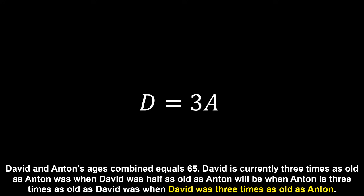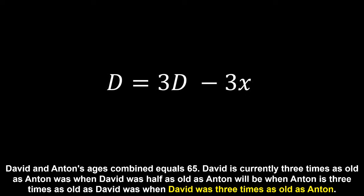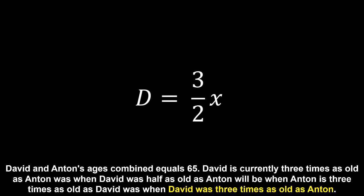The final age described is that David was three times as old as Anton. We have the difference in their ages of X, so we can define Anton's age as David's age minus the difference. We can substitute Anton's age in the formula, and now describe David's age as three times David's age minus the difference. Expanding the brackets, taking three times David's age from both sides, and dividing by negative two, we can see that David's age in this final time frame is three on two times the age difference.